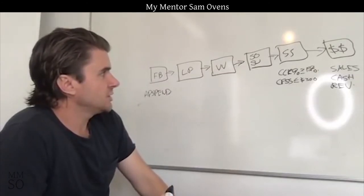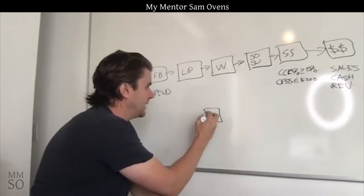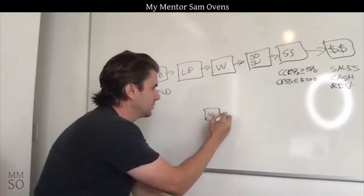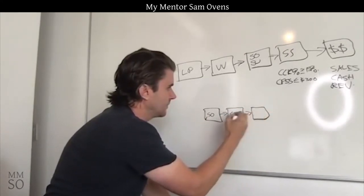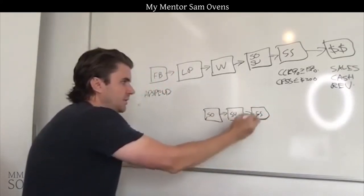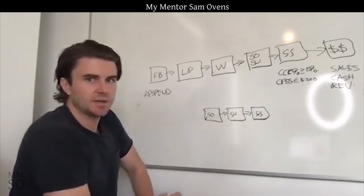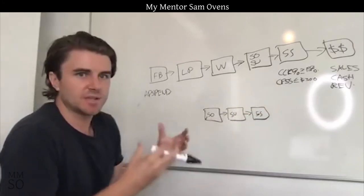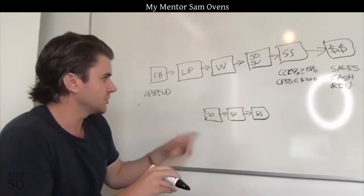So then we look at the strategy session piece as a subsystem. There can be a lot of erosion from Schedule Once to survey to a strategy session — a lot of decay through here. People can schedule with Schedule Once but not complete the survey. That doesn't count as an application. You don't take calls with people who scheduled but didn't complete the survey. You cancel those calls.